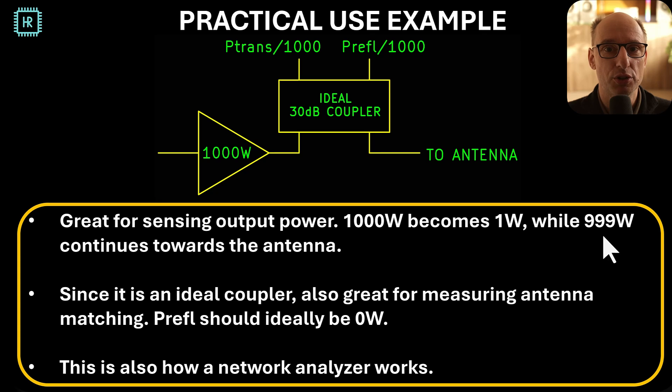Now this is that example that I just mentioned. Let's assume you have a 1000 watt power amplifier and you would like to know what kind of power you're transmitting and what kind of power is coming back from the antenna. In this case you want to use a 30 dB coupler probably because if you use 20 dB you still have 10 watts here. With a 30 dB coupler you get 1 watt here which is very acceptable to measure.